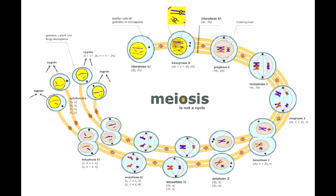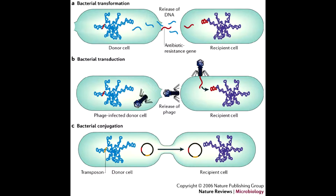Eukaryotes experience dramatic reduction in relatedness with meiosis. A sexual mother would only be half-related to their daughters since the father's genes would also get passed down. As for prokaryotes, they are able to send DNA to another cell through conjugation, transduction, and transformation.